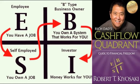Saying it simply, an S, self-employed, owns a job. A B, business owner, owns a system and then hires competent people to operate the system. In many cases the S, self-employed, is the system — that is why they cannot leave. To be successful as a B, business owner, requires ownership or control of systems and the ability to lead people. For S's, self-employed, to evolve into B's, business owners, they need to convert who they are and what they know into a system. And many are not able to do that, or they are often too attached to the system.